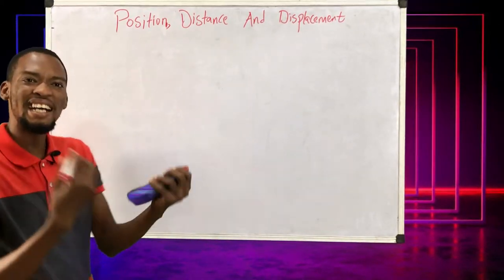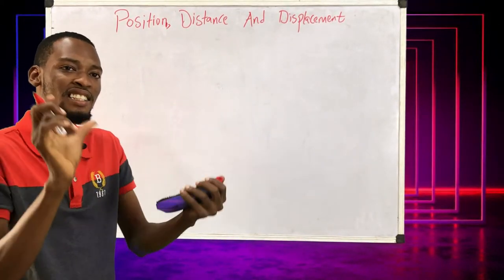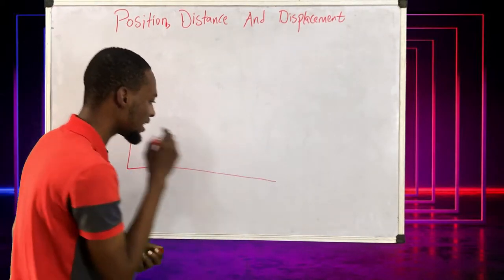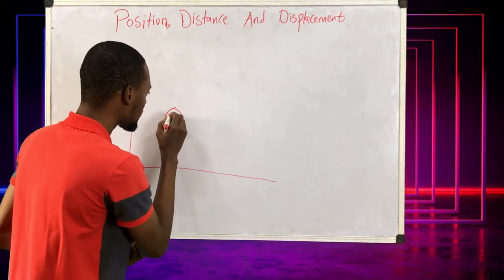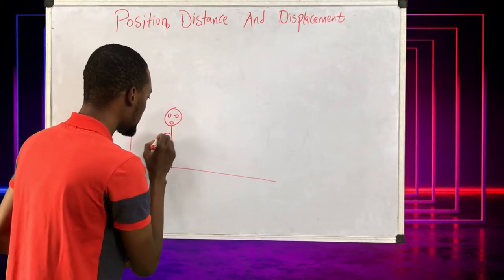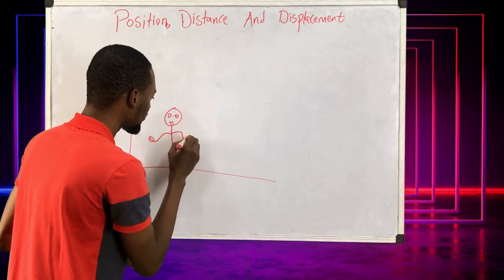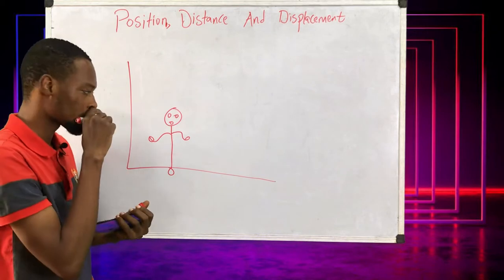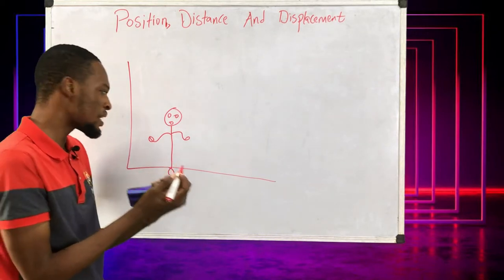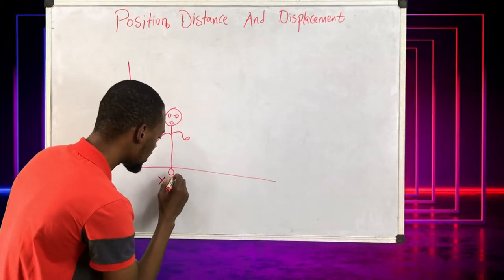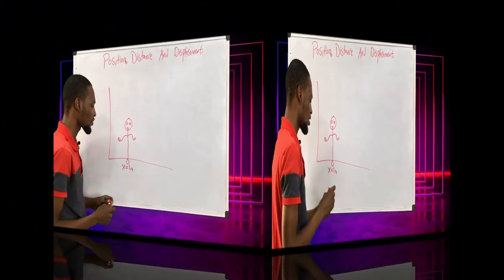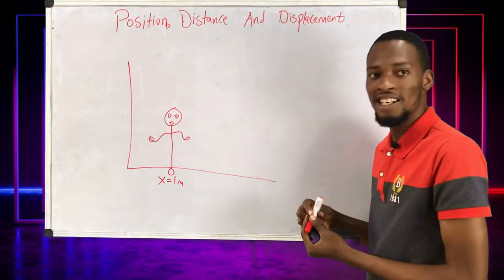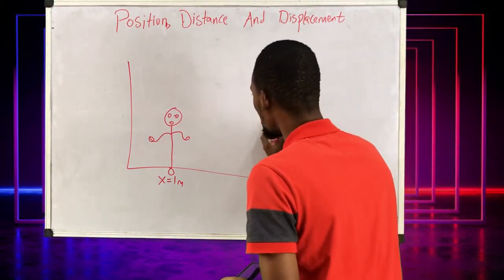Position is where an object is at a particular time, or at every point in time. If I draw something like this and I am here, this is my position. Let's say my position here is s equals one meter.